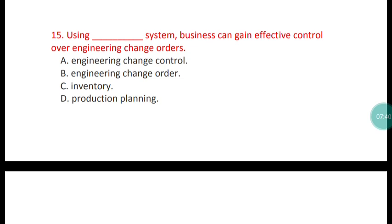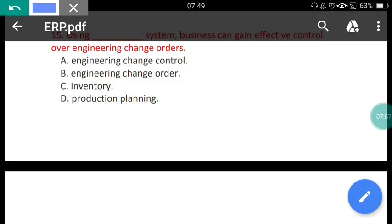Question 15: Using which system can a business gain effective control over engineering change orders? The correct answer is option A — using an engineering change control system, a business can gain effective control over engineering change orders.